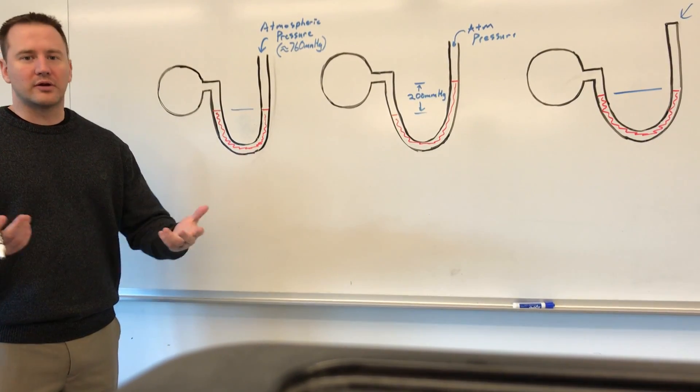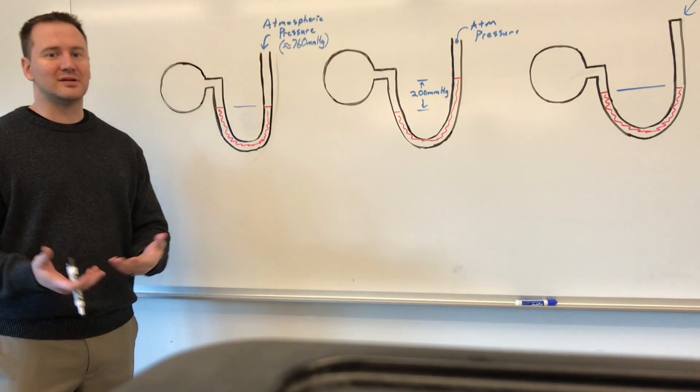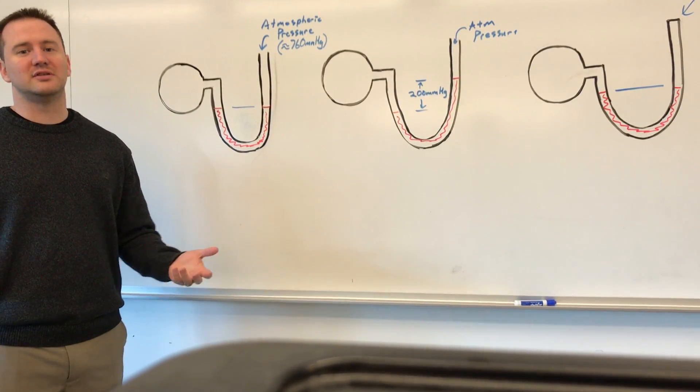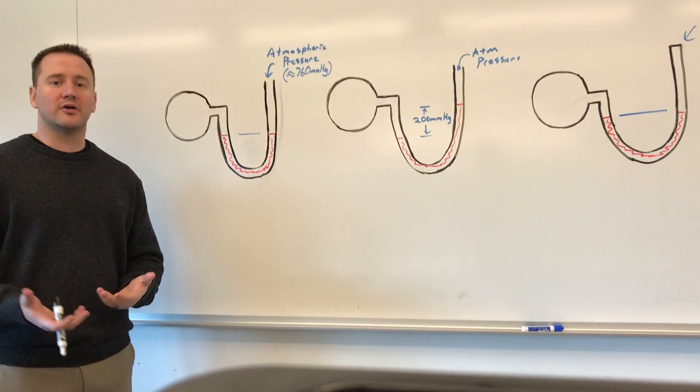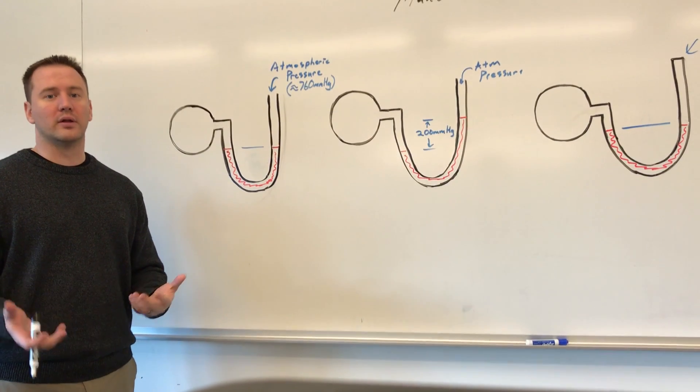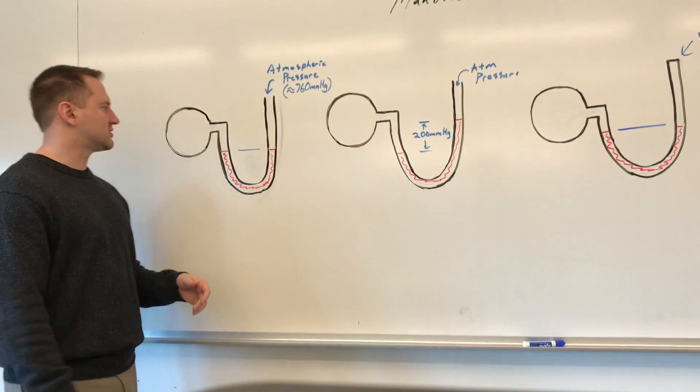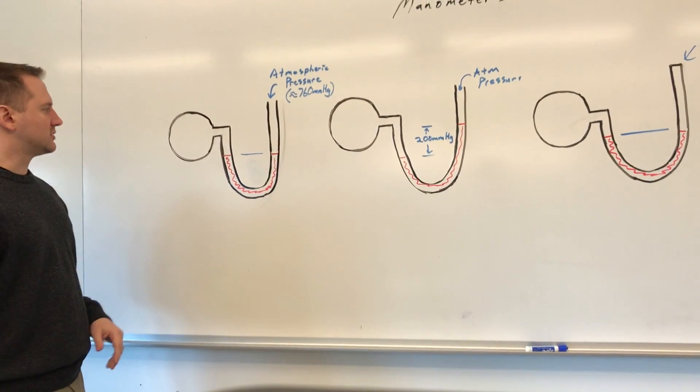Now, the reason we use mercury for something like this is it's a liquid that is very dense—it's about over 13 times as dense as water—and it also isn't going to evaporate and start boiling under low pressure conditions. So we can use it for experiments like these.